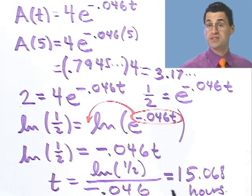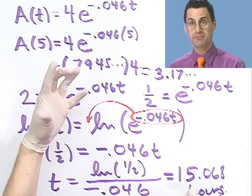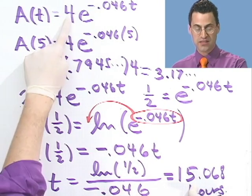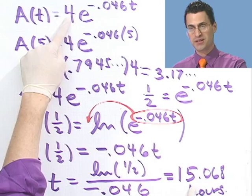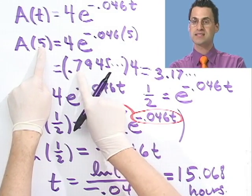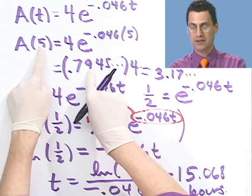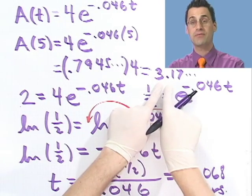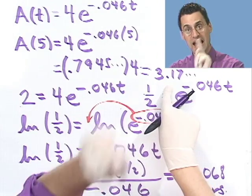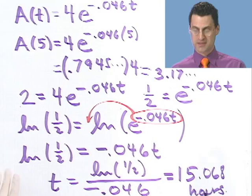Now that makes a lot more sense. I caught it just by not simply reporting the answer, but by thinking about what's going on. If I have to wait 15 hours to have half as much and I start with 4, then 5 hours later I should have more than half left — and sure enough, 3.17 is more than half. Notice I was able to catch an error just by thinking through my answers. That's a really important lesson.